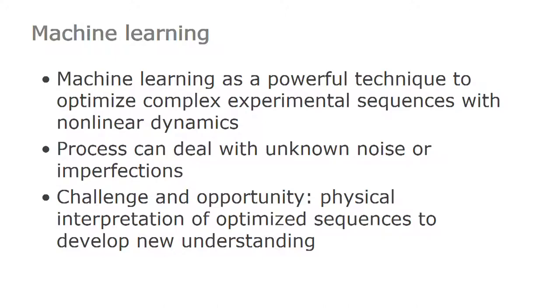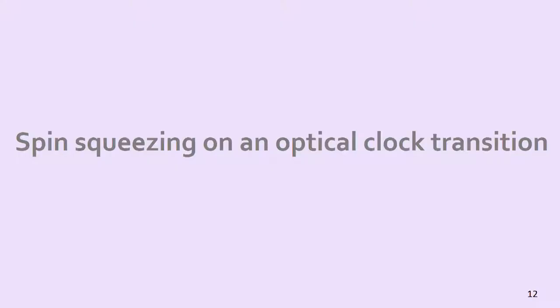I believe this is a powerful technique to optimize complex experimental sequences with nonlinear dynamics. The process can deal with unknown noise or imperfections in the system that you may not know about, because it can avoid heating at some trap frequencies, et cetera. It also presents a challenge and opportunity in the sense that we see these sometimes strange nonlinear sequences, and the question is whether we can learn something physically from them — can we interpret these sequences to gain insight into what we could do to improve the system? We are starting to apply machine learning in our group to many different experimental systems with such nonlinear dynamics.